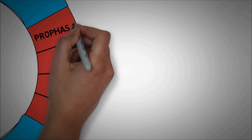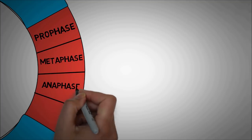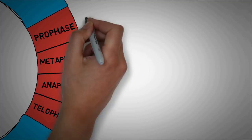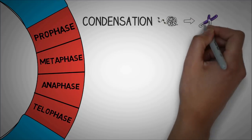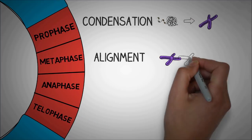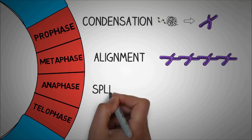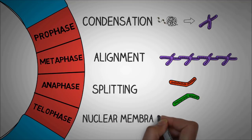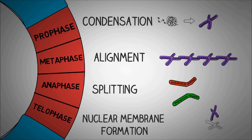The whole process of mitosis is divided into four simple stages. Prophase, metaphase, anaphase, and telophase. And the basic concept of each of them is condensation, alignment, splitting, and nuclear membrane formation. I will explain all this in a bit.